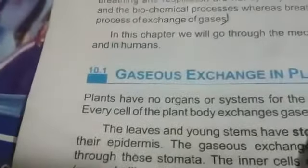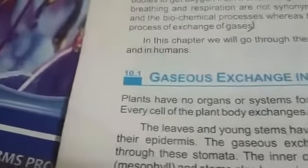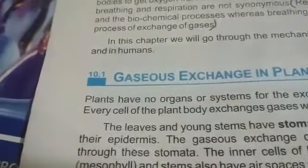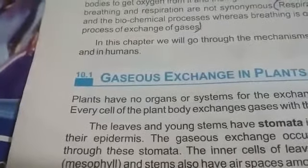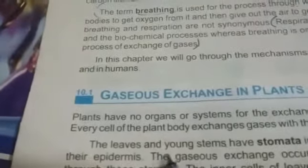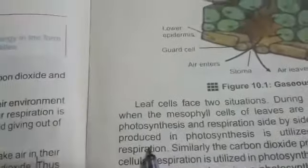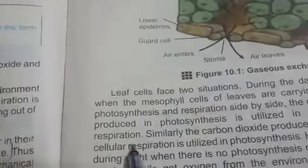Gas exchange in leaves and young stems involves two situations for leaf cells. During daytime, when the mesophyll cells carry out photosynthesis and respiration side by side, the oxygen produced in photosynthesis is utilized in cellular respiration. Similarly, the carbon dioxide produced during cellular respiration is utilized in photosynthesis. However, during night, when there is no photosynthesis, the leaf cells get oxygen from the environment and release carbon dioxide through stomata.